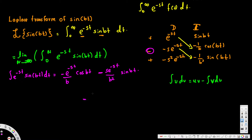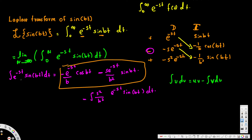This gives us the uv part minus the integral of s squared over b squared times e to the negative st times sin(bt) dt. Notice that this remaining integral is similar to the original left-hand side — both contain e to the negative st times sin(bt). The difference is just a constant in front. So we can add s squared over b squared times the integral of e to the negative st sin(bt) dt to both sides, which cancels the integral on the right.